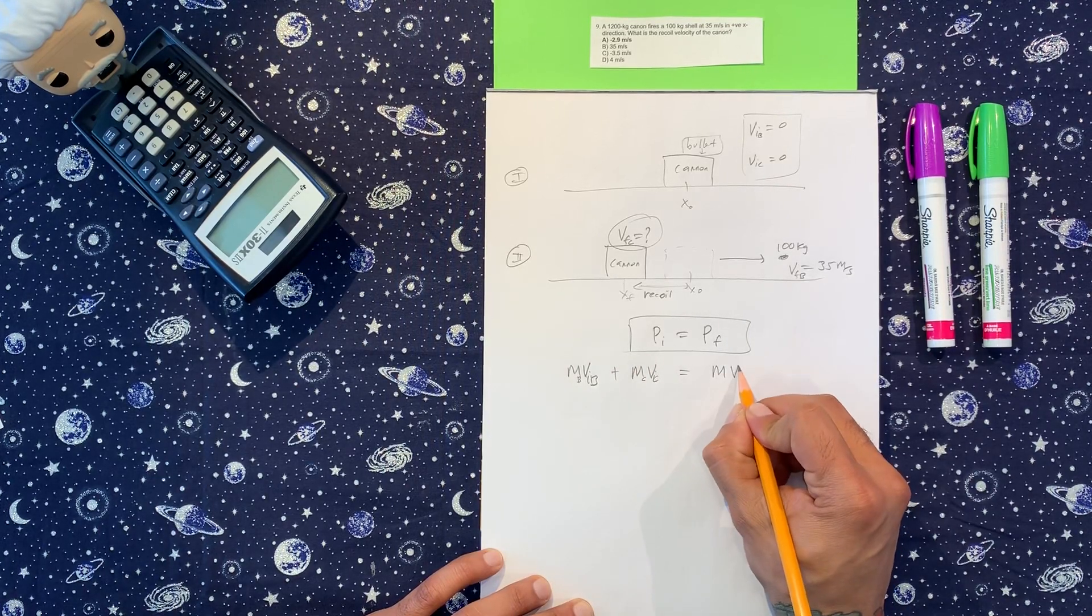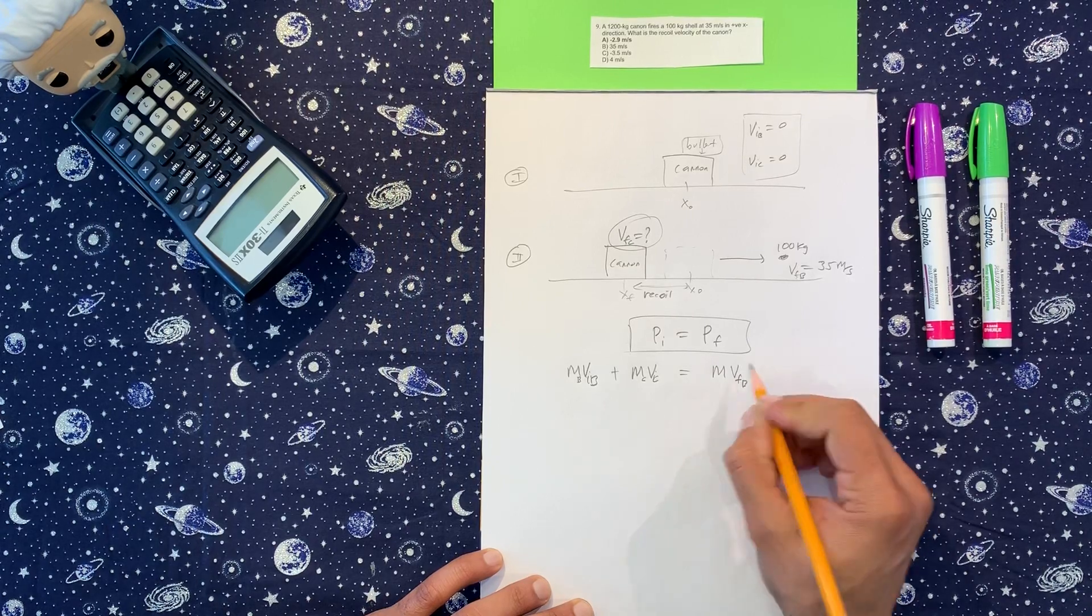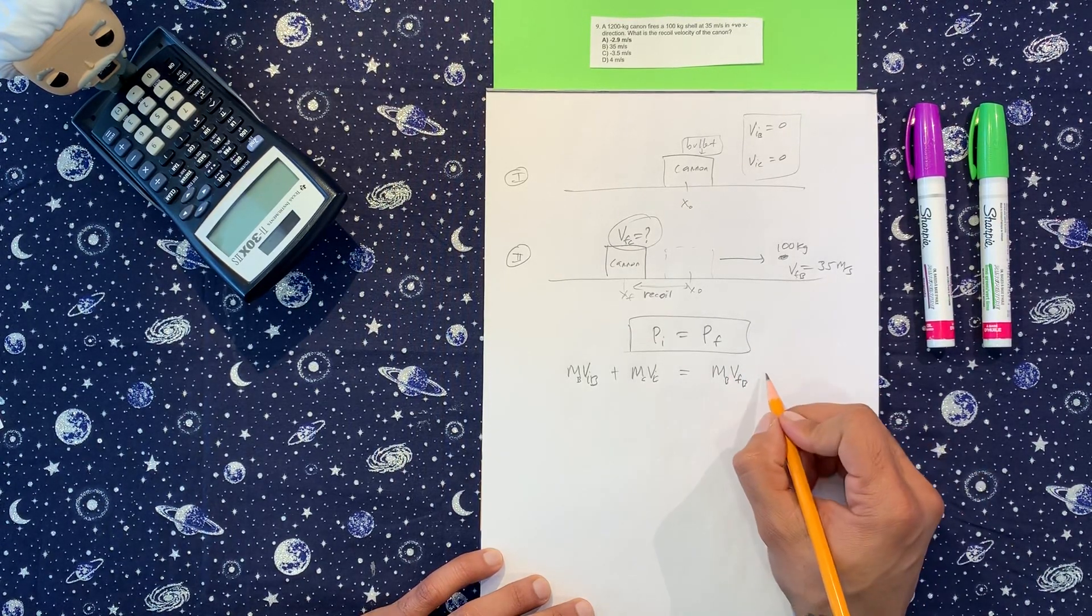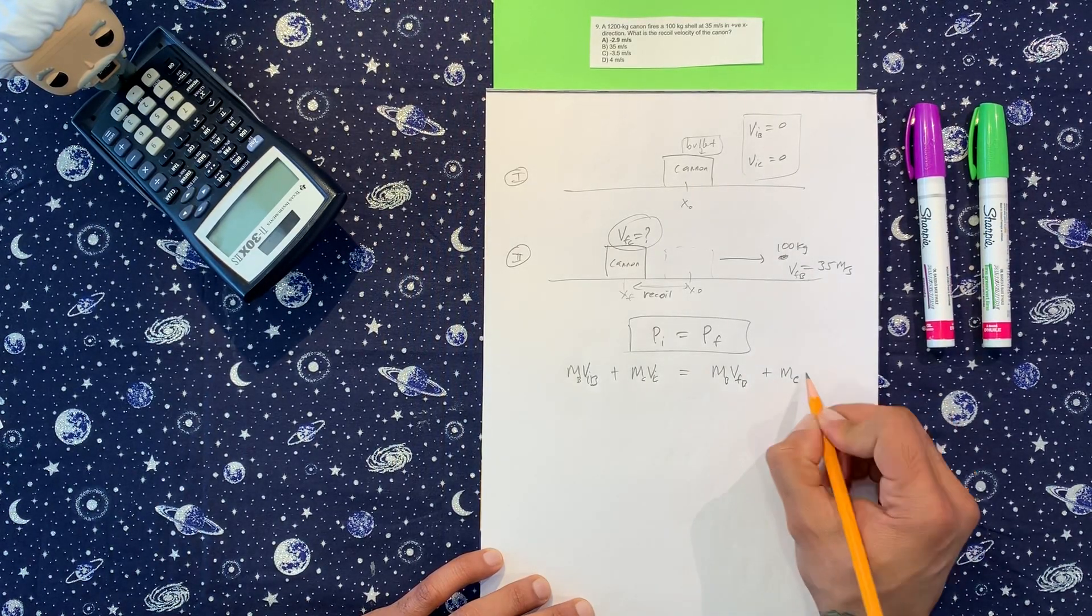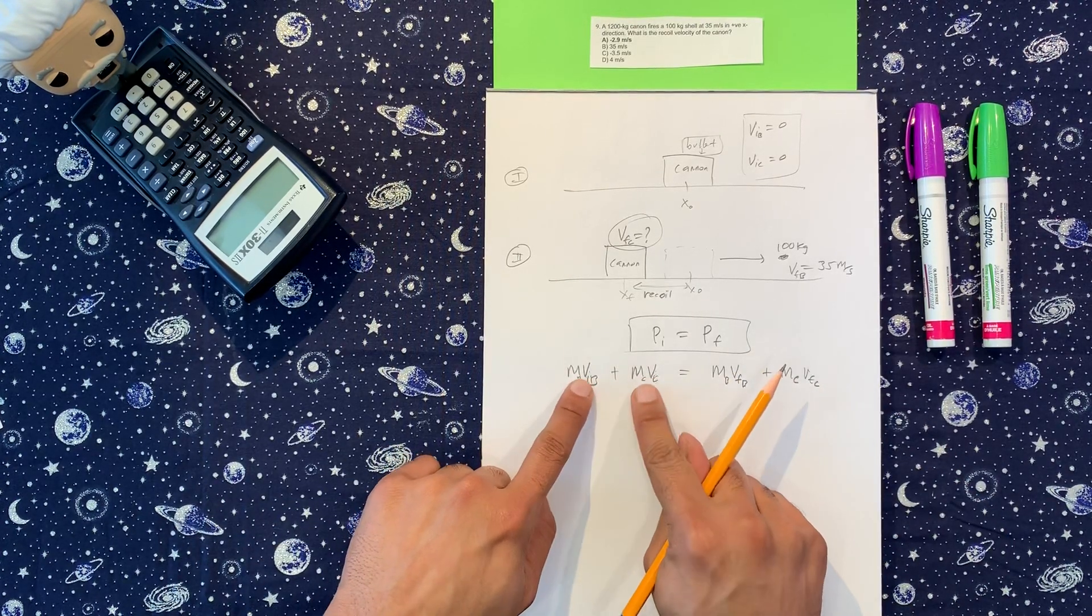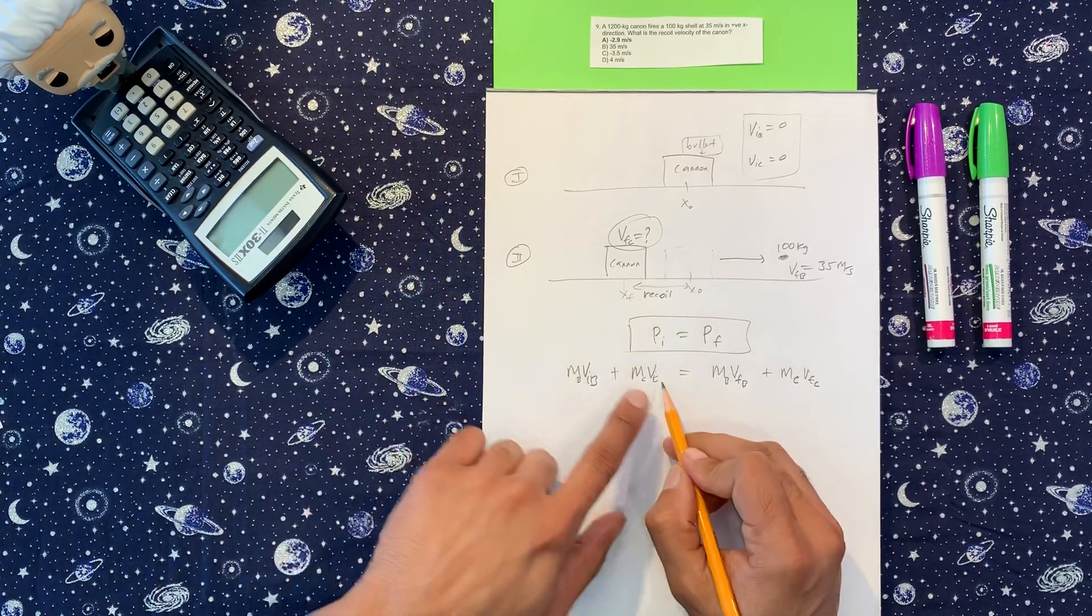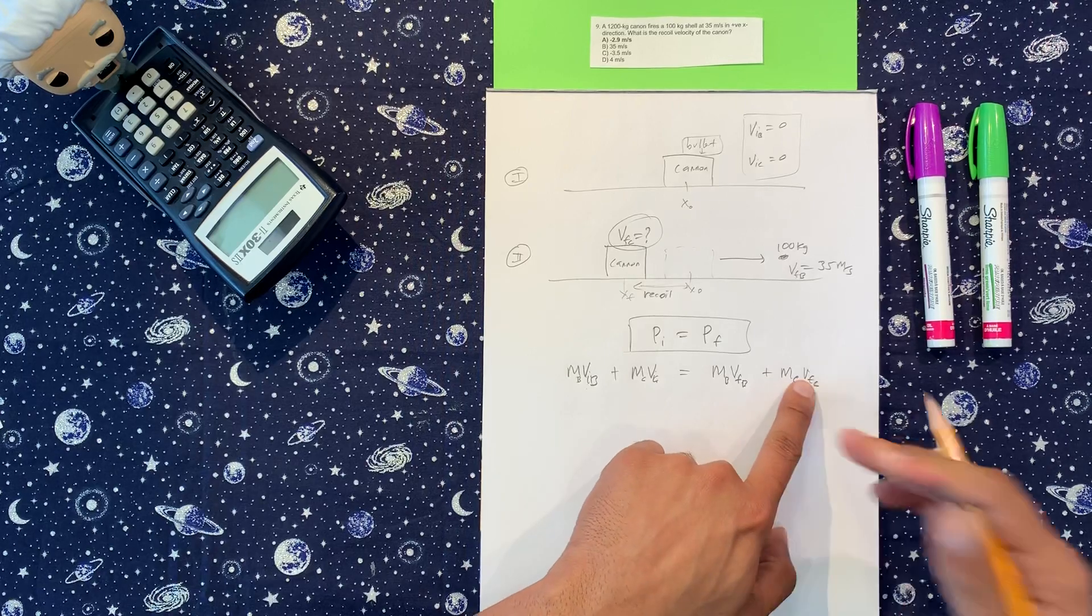Mass times velocity final of the bullet, plus mass of the cannon velocity final of the cannon. So mass velocity, mass velocity, this is the bullet. This is the cannon. Initially, this is the bullet. This is the cannon.